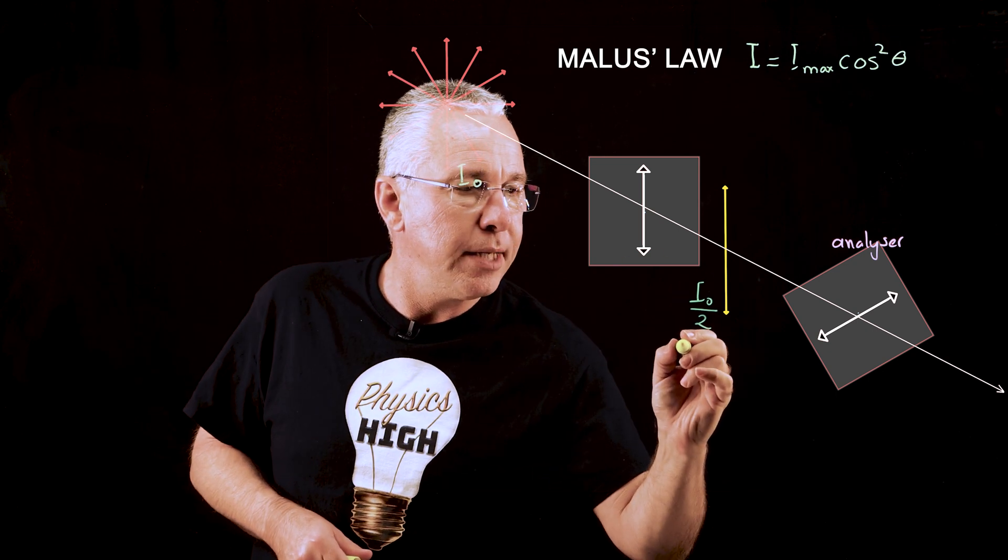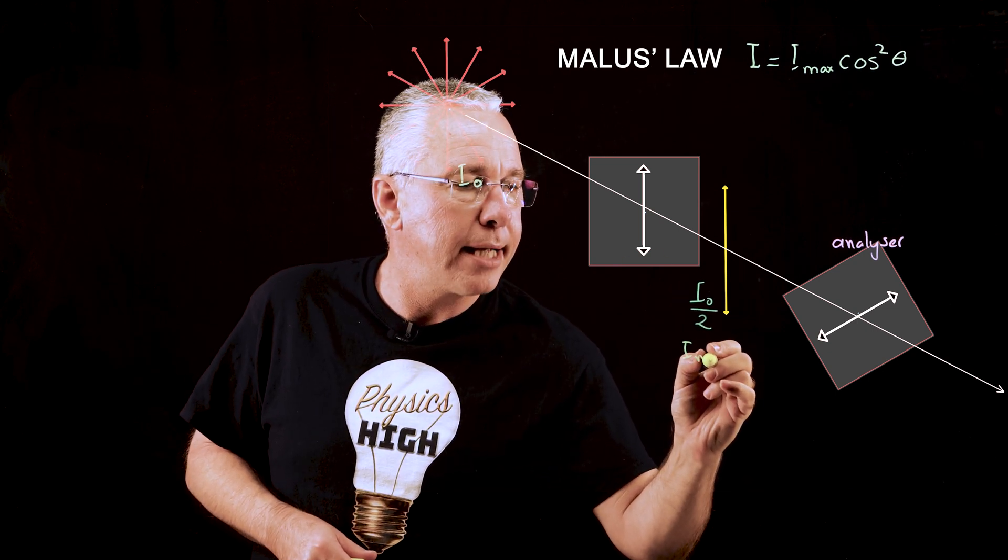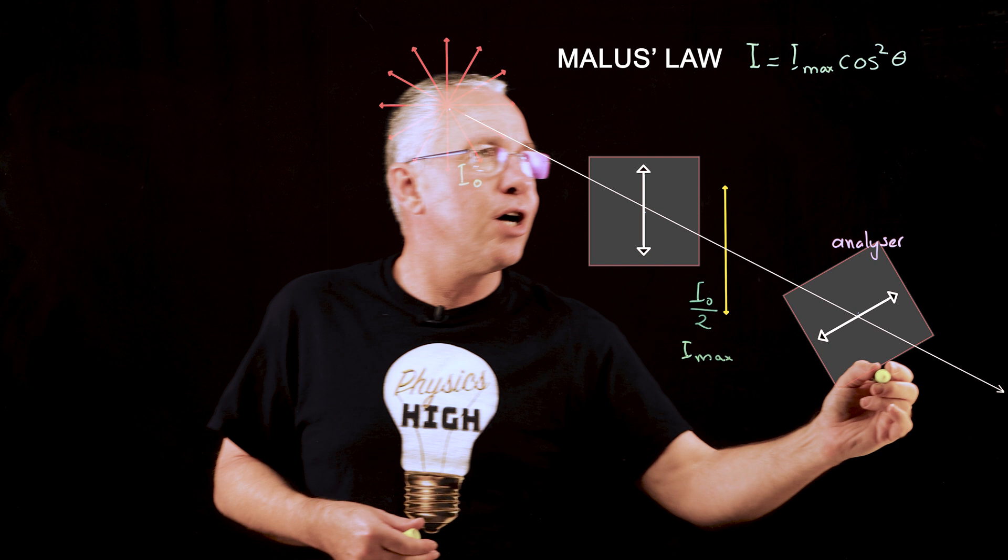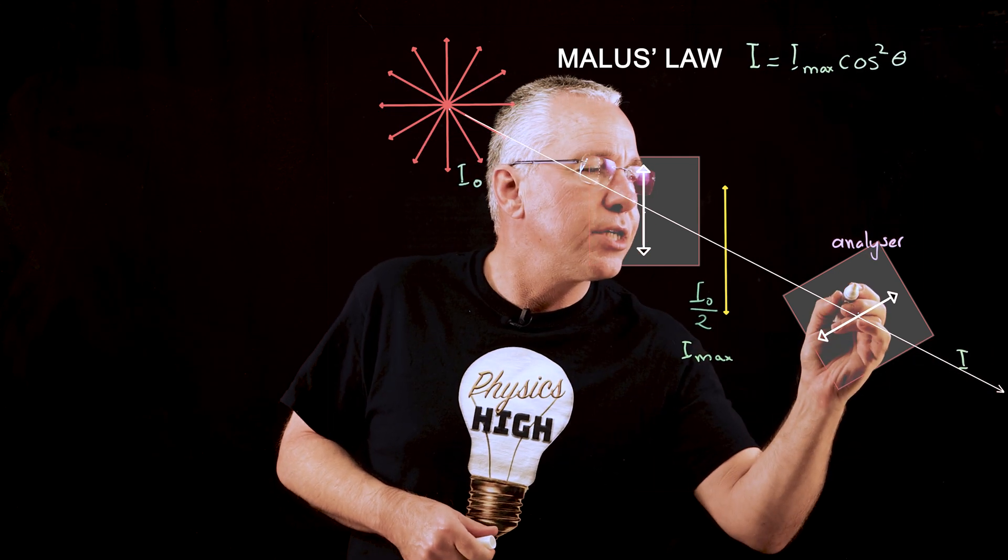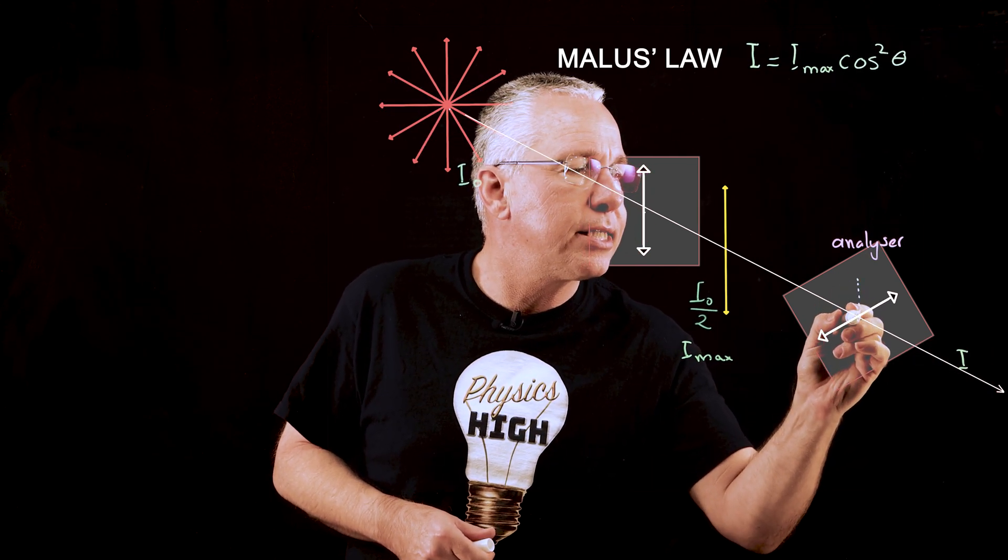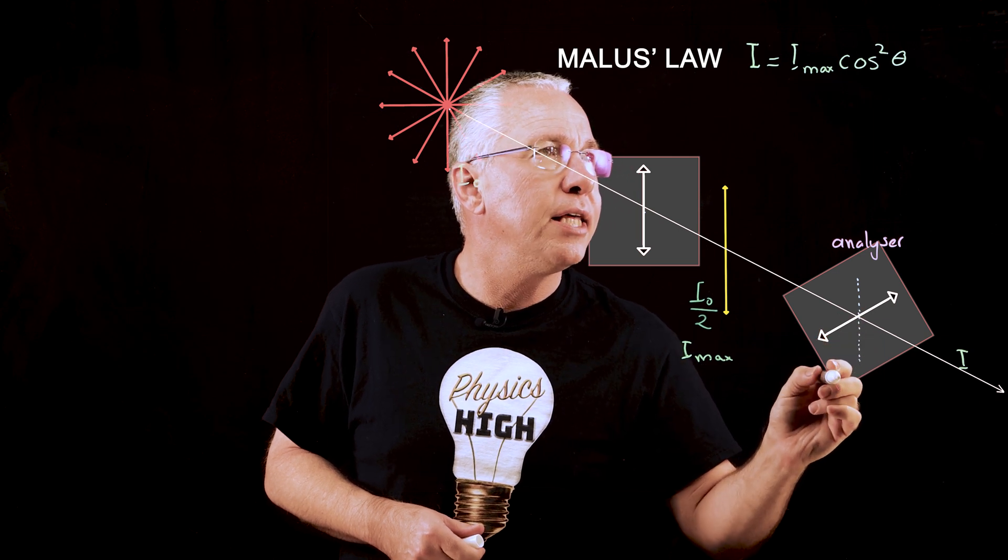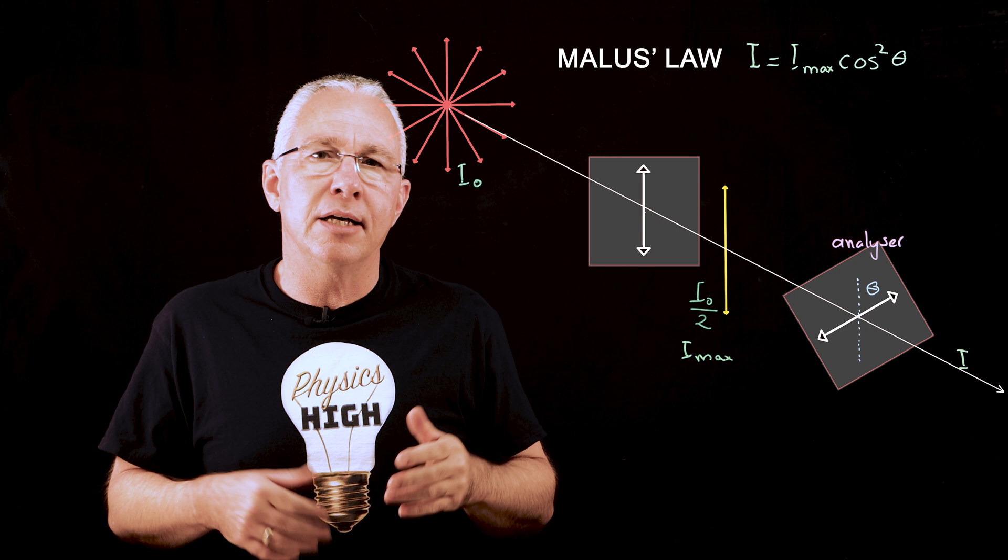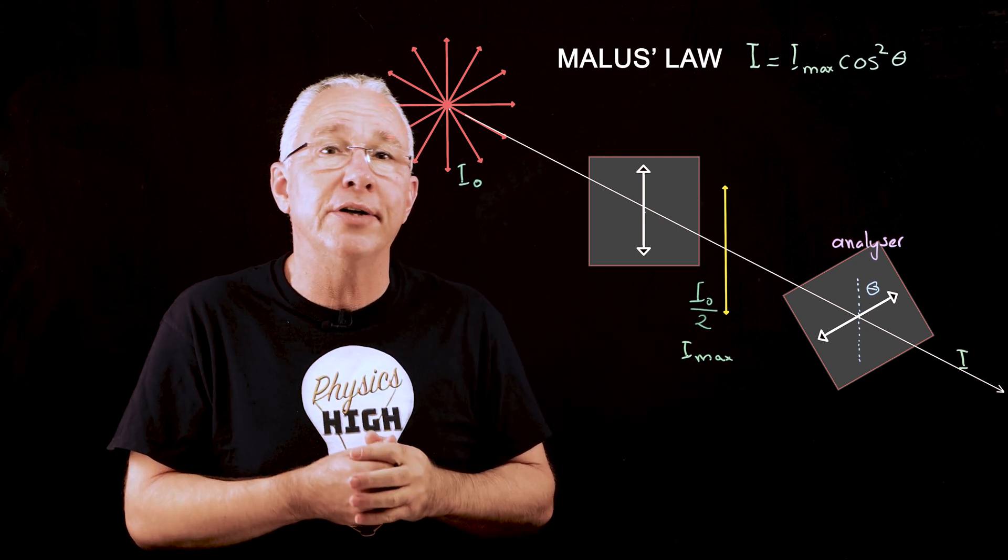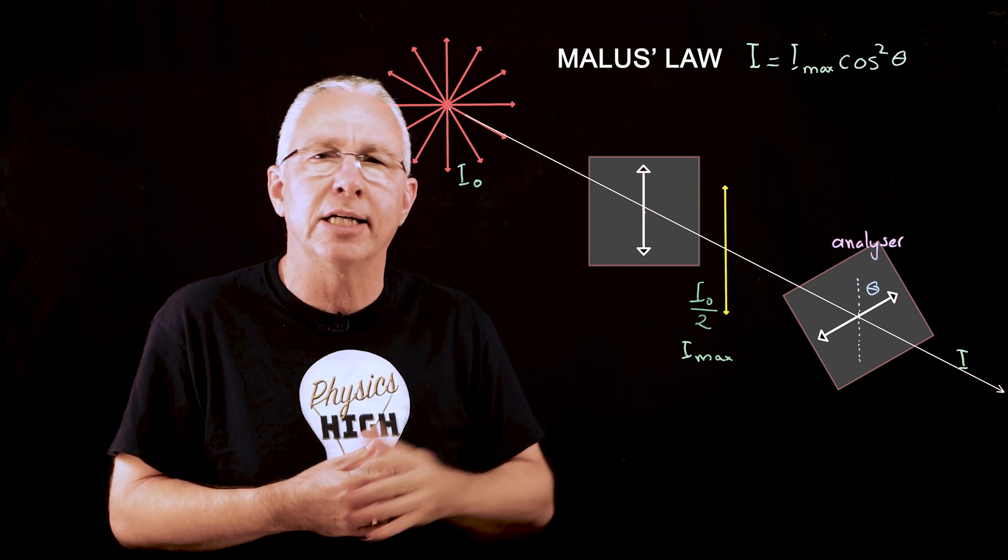And so our I naught over two is our I max. The intensity coming out over here is I. What about our angle? And so if this represents the axis of the first filter then the angle that we have is going to be theta. And so in this case we have a 60 degree angle between the polarizer and analyzer.